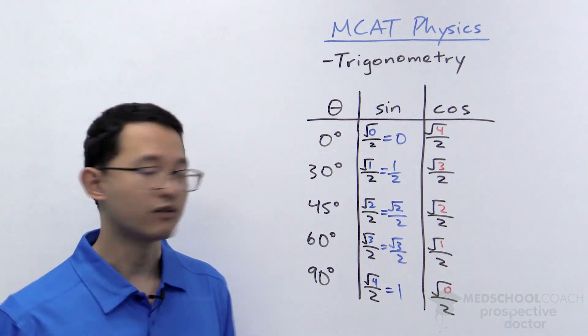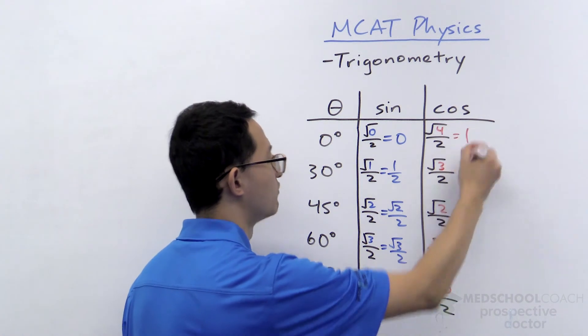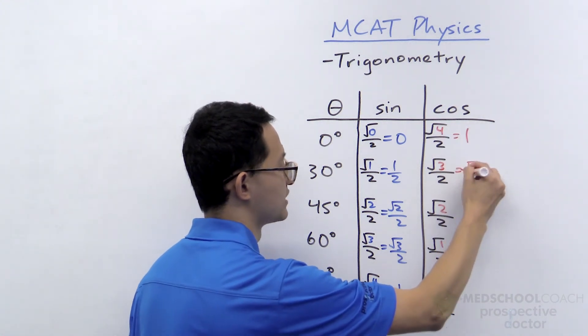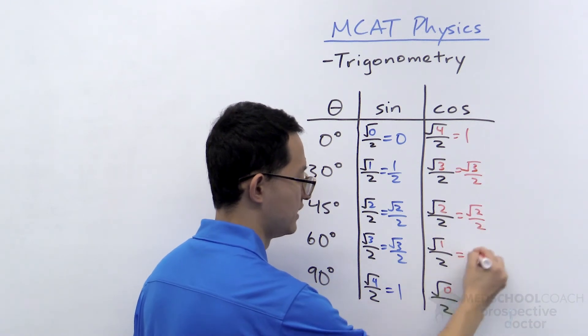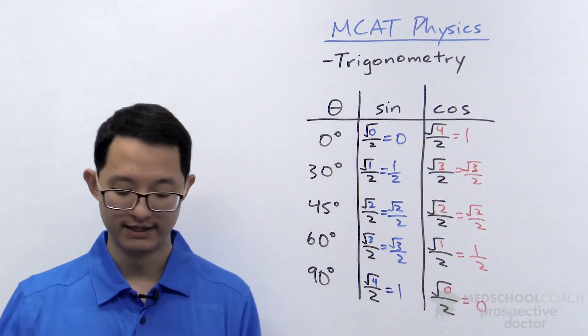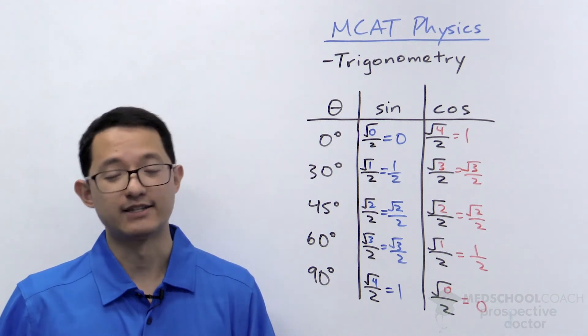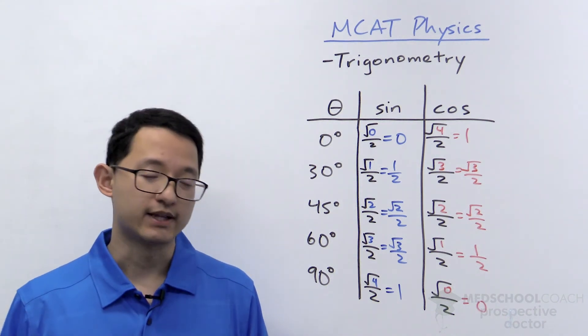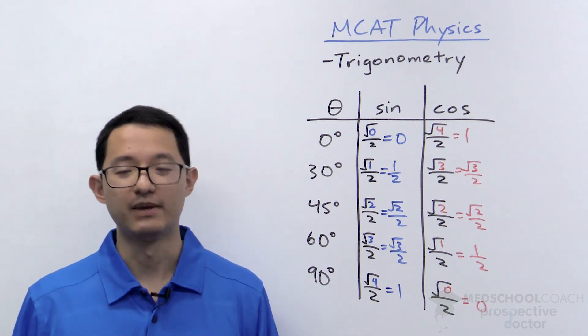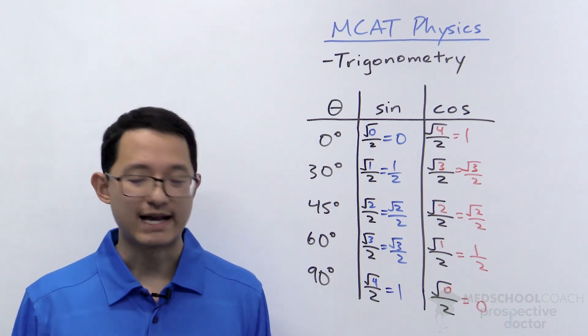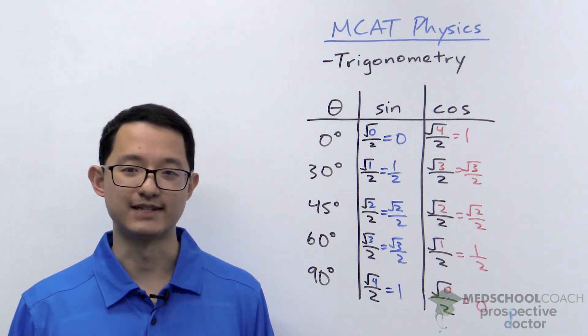And we've already calculated all the values. So we know this is going to be 1. This is going to be square root of 3 over 2. Square root of 2 over 2. 1 half. And 0. And that's it. All right. So on your exam, if you want to quickly write down this table, it's going to save you a lot of time having to figure out what is sine and cosine of all of these different angles.